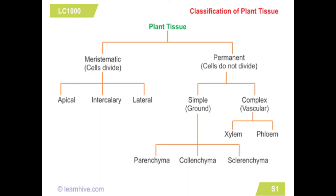In the cross section, we have the epidermis on the outside. Inside the epidermis is the cortex, and the center is called the pith. The vascular bundle forms the vascular system. The layer called the endodermis surrounds the vascular bundle.